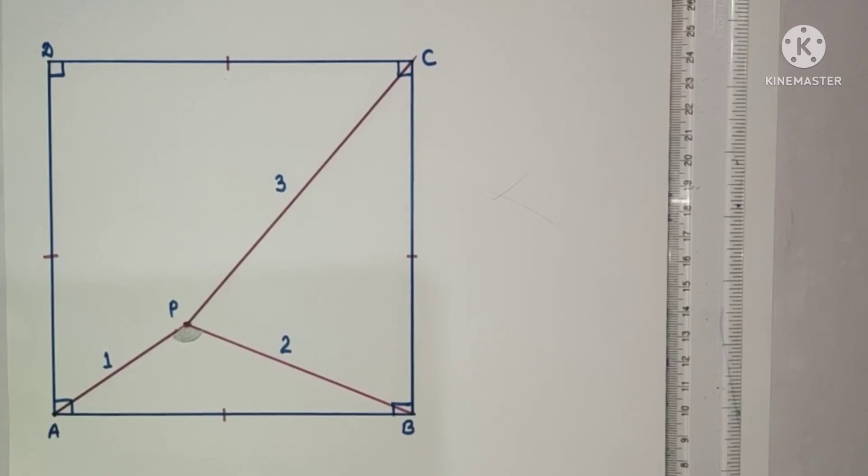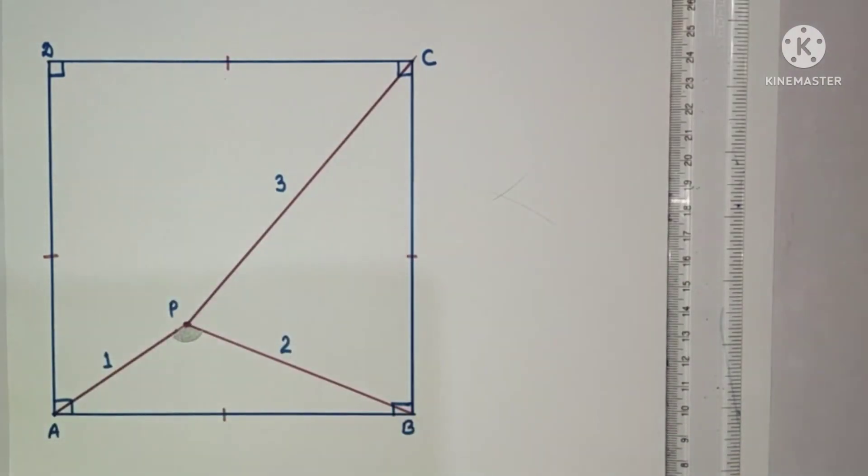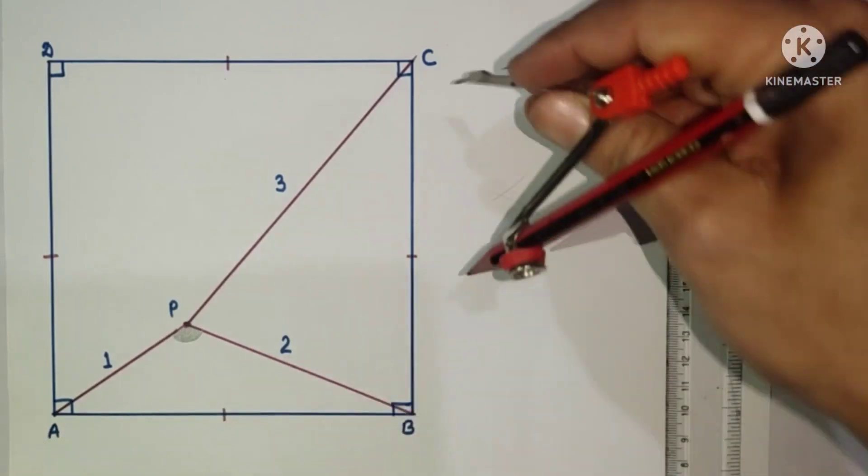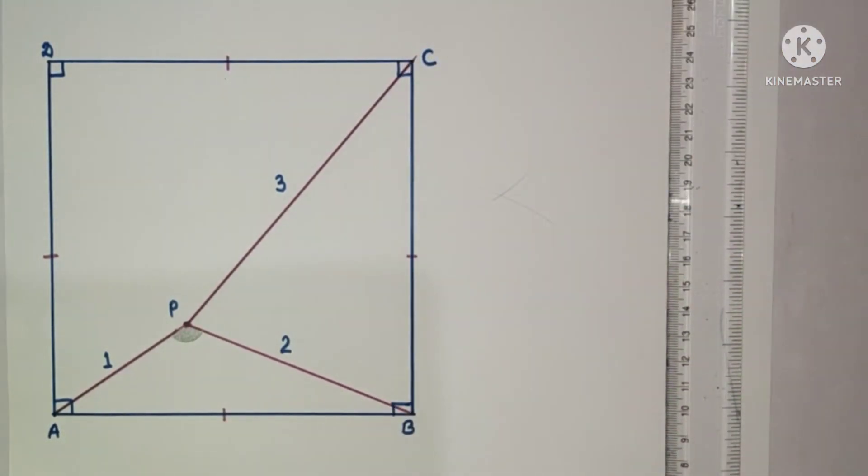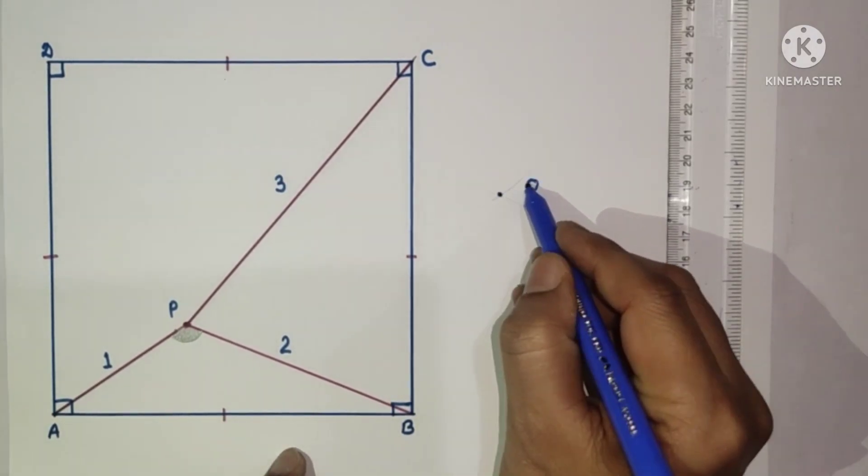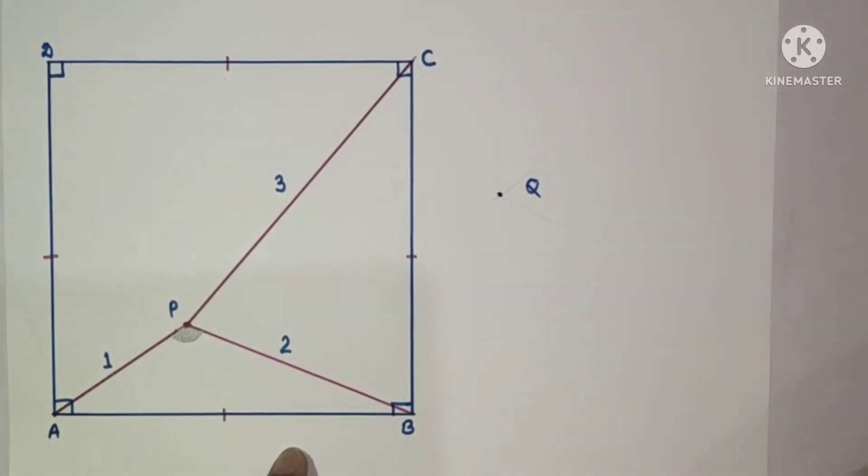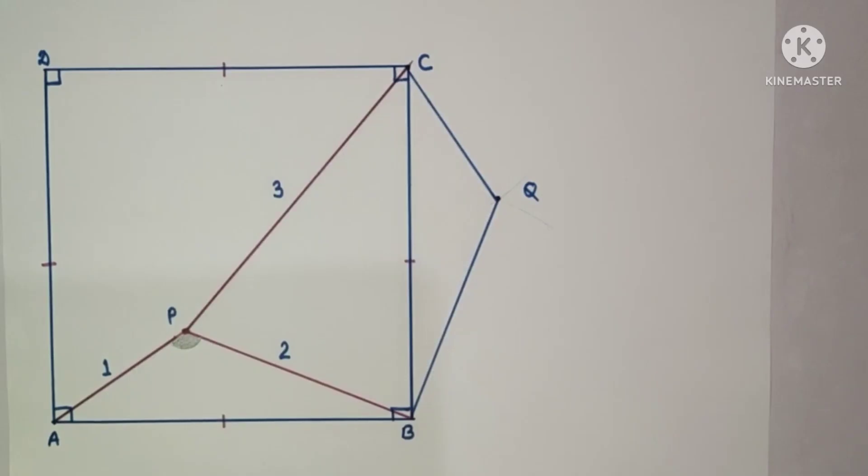From point B, take an arc of length BP. From here, cut this arc, and from this point take the arc length PA and cut here. So these two arcs intersect at this point, and let us suppose this point is Q. Join BQ and QC. We are going to prove that two triangles APB and BQC are congruent.